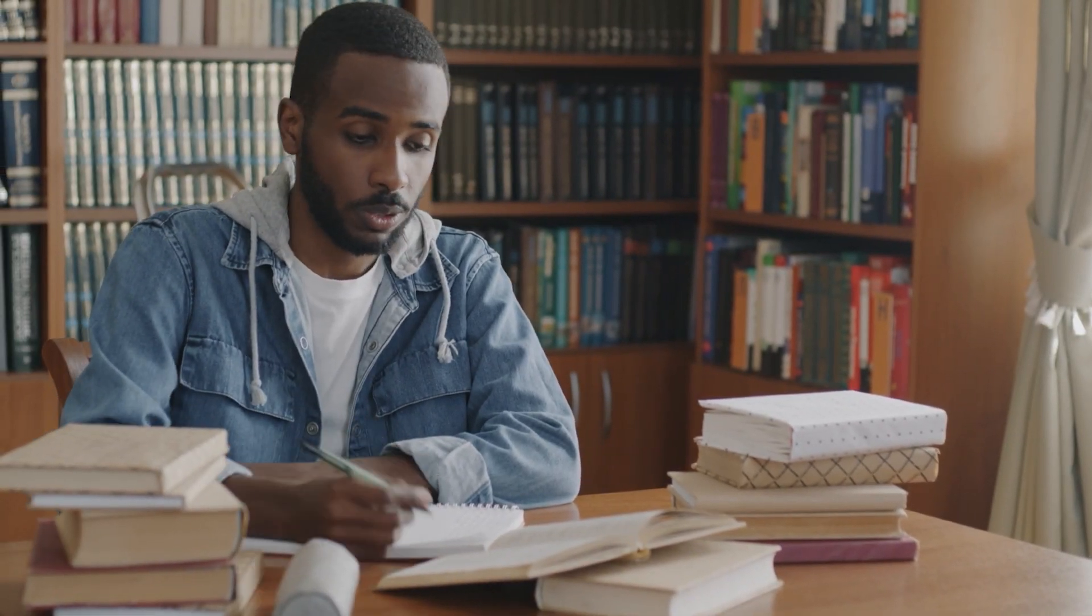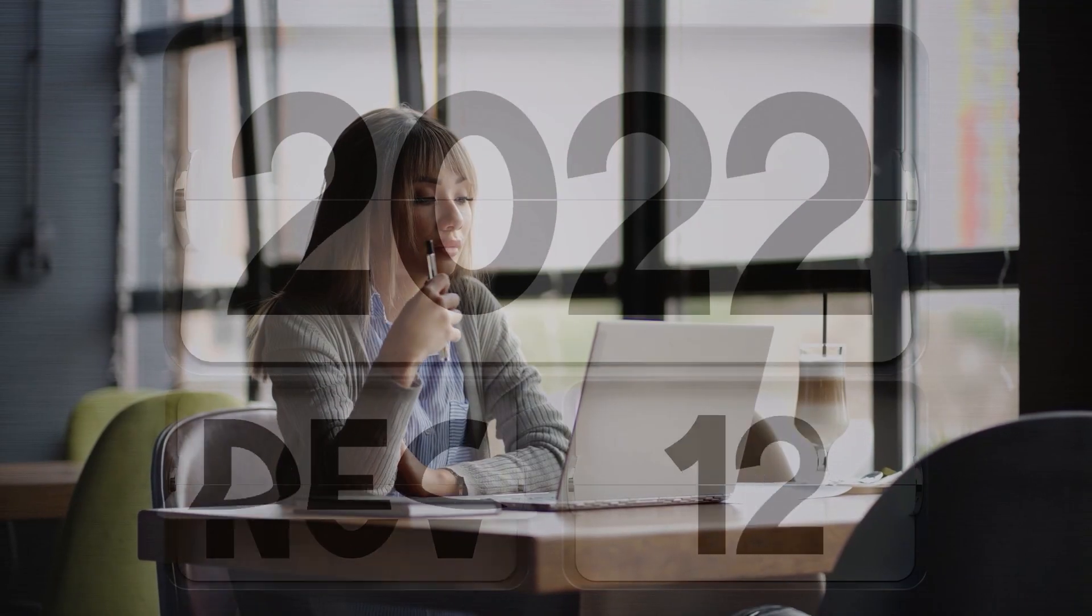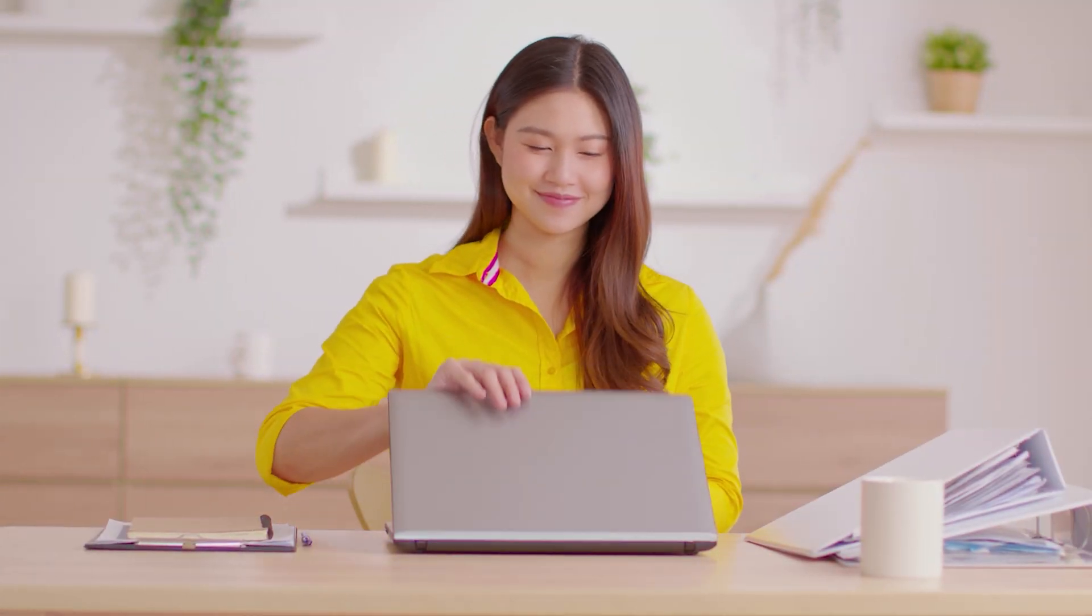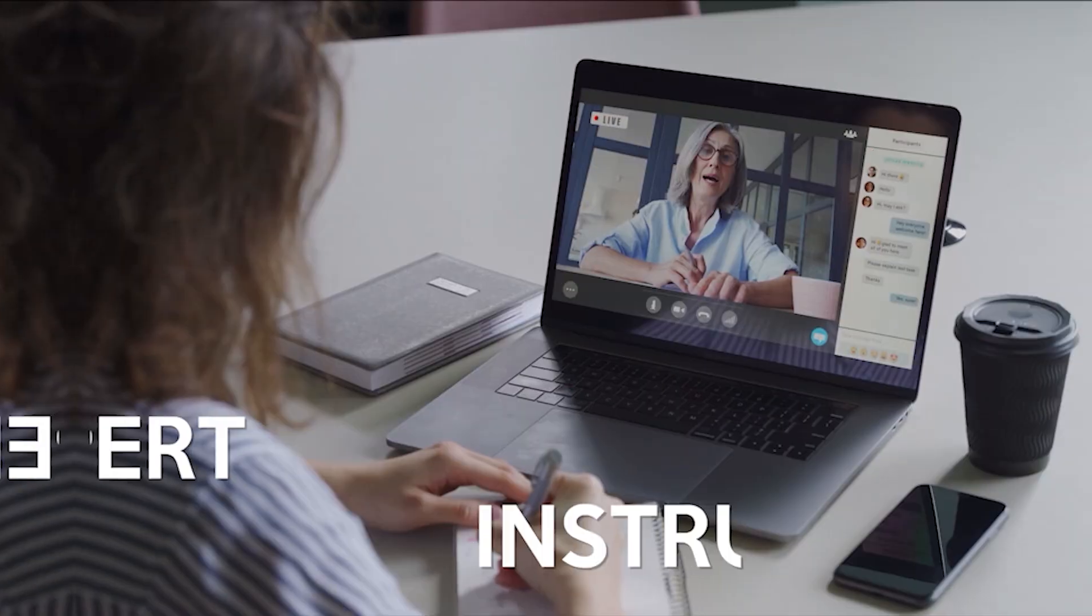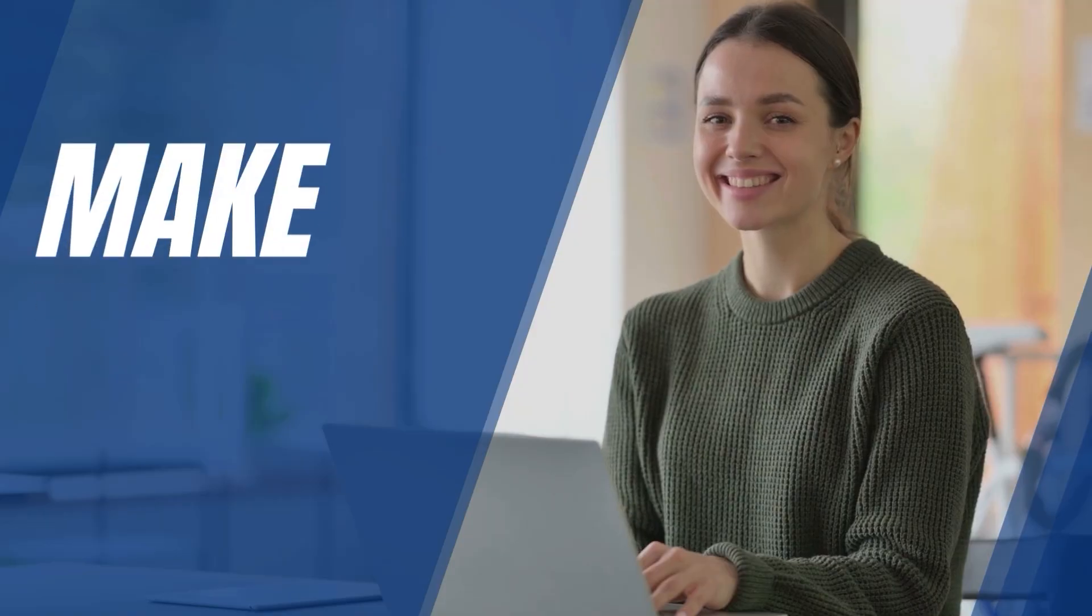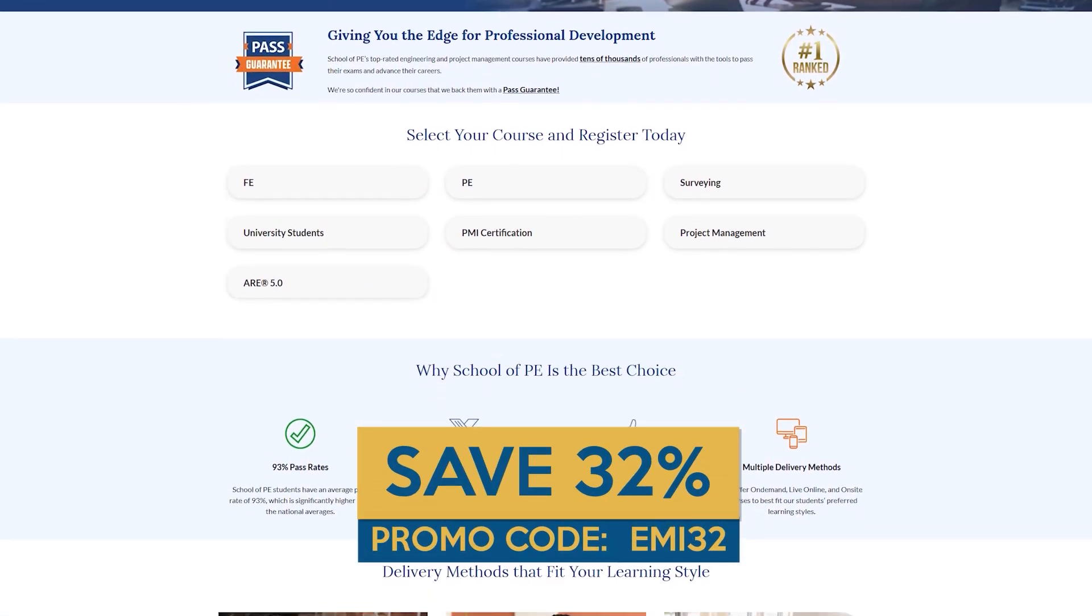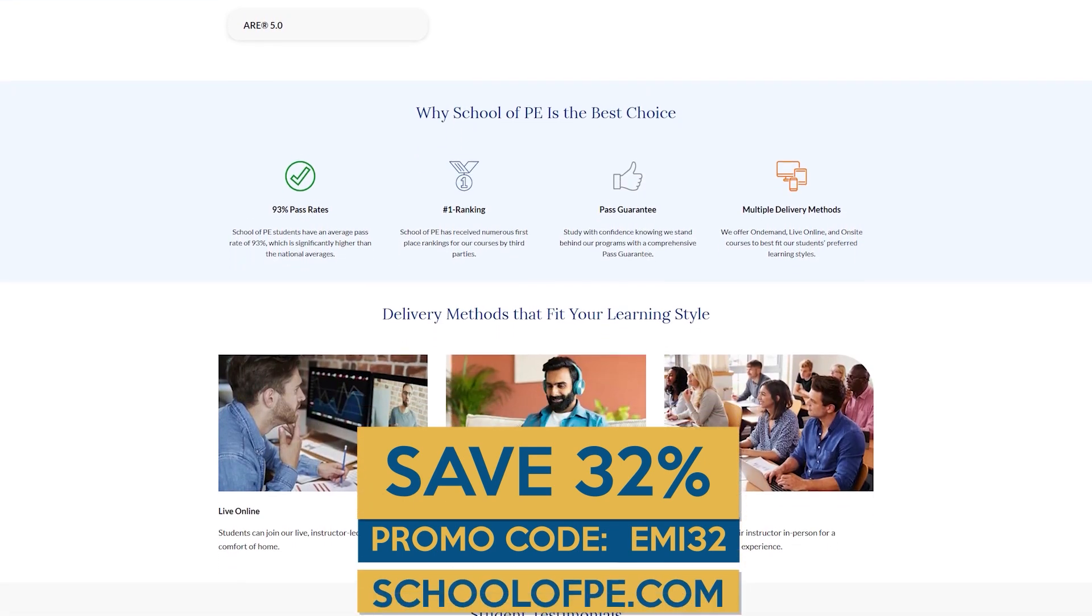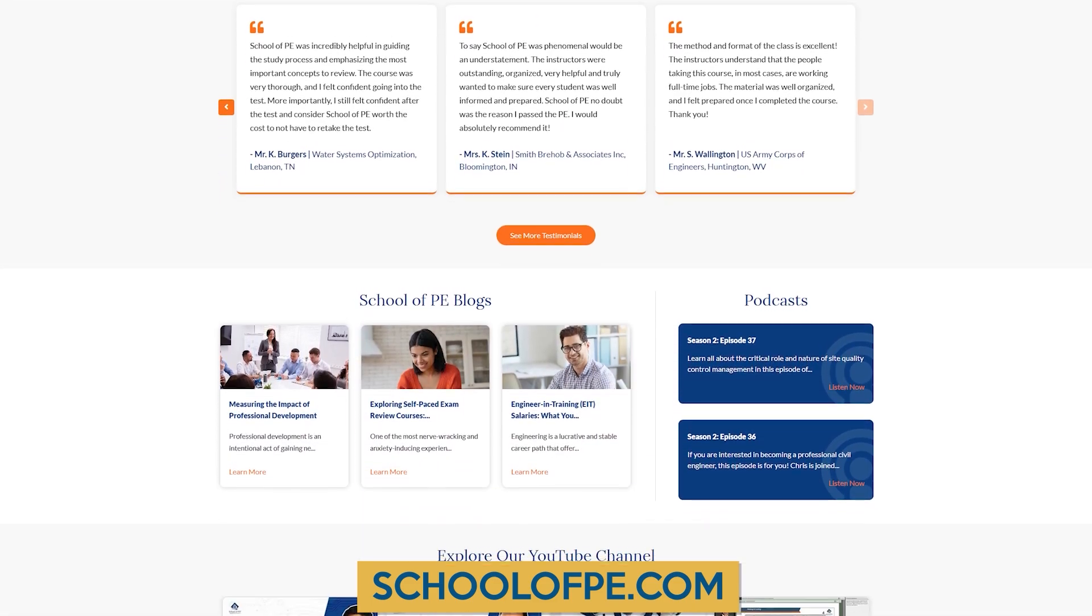Are you putting off preparing for licensure? Waiting for life to slow down so you have time to prep? Months from now, you could find yourself still waiting for the right time. Or you could start preparing today with School of PE. Take the guesswork out of exam prep. With 93% pass rates, expert instructors, and a pass guarantee, you'll be walking into that exam fully prepared. Make the right choice today. Enroll now and save 32% with promo code EMI32 at schoolofpe.com.